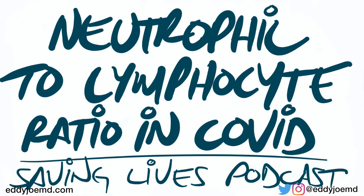Welcome to the Saving Lives Podcast. I'm Eddie Joe. Today is the 23rd of November 2020, and the article I'm going to be discussing was published just a couple days ago on the 16th of November. I actually took apart the study on Instagram and got a lot of good feedback, so I decided to share this article on my podcast. The title is 'Predictive Values of Neutrophil to Lymphocyte Ratio on Disease Severity and Mortality in COVID-19 Patients, a Systematic Review and Meta-Analysis.' I want to tip my hat to these authors for coming up with this systematic review and meta-analysis and having it published.